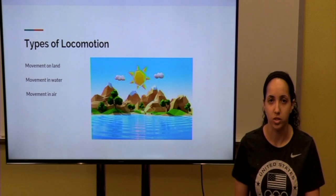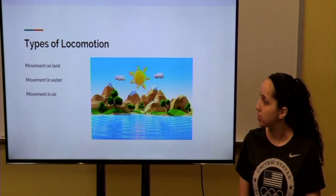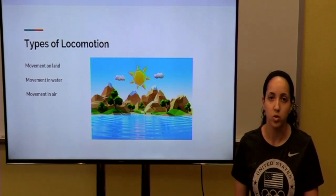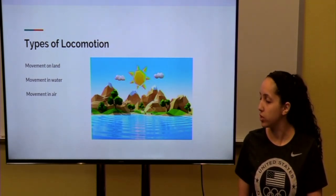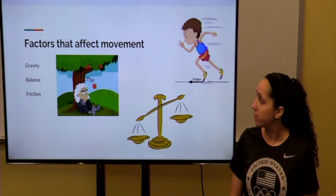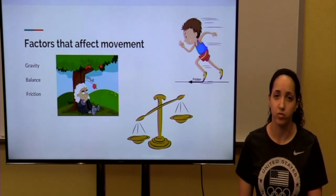Now, let's talk about types of locomotion, or movement. There are three types of locomotion. Locomotion on land, locomotion in the water, and locomotion in the air. Factors that affect movement are gravity, balance, and friction.